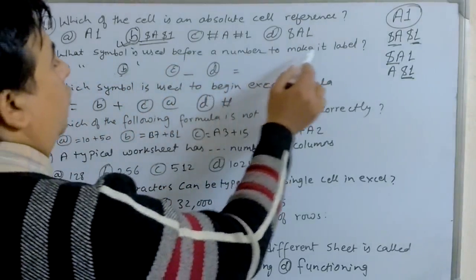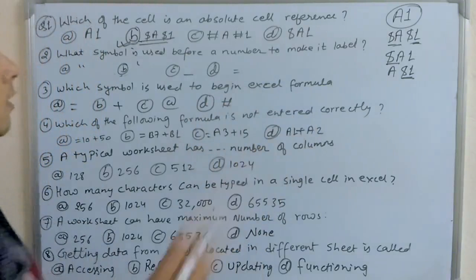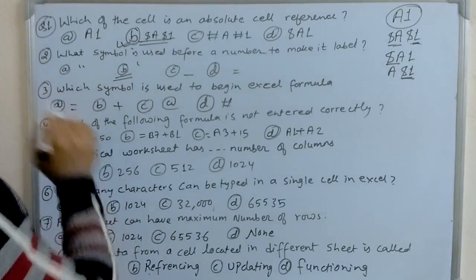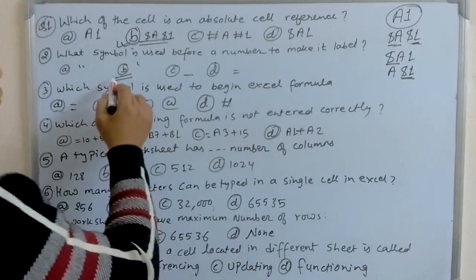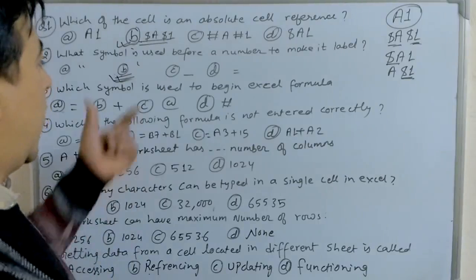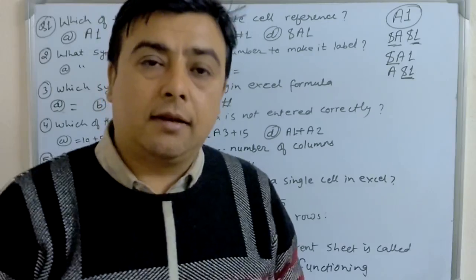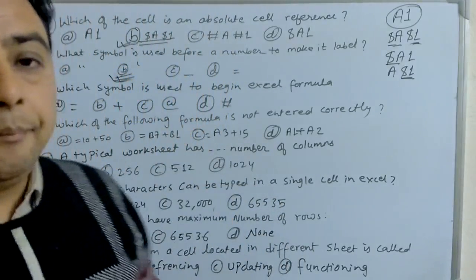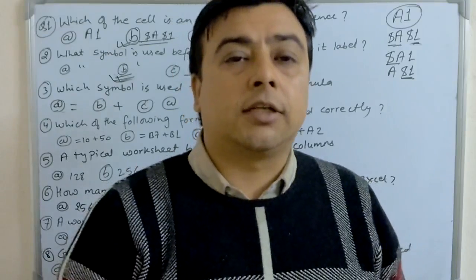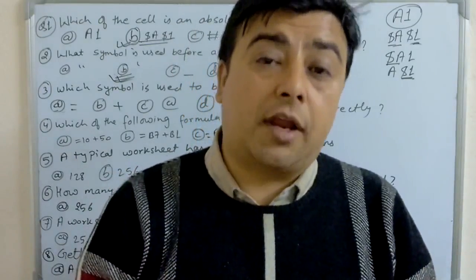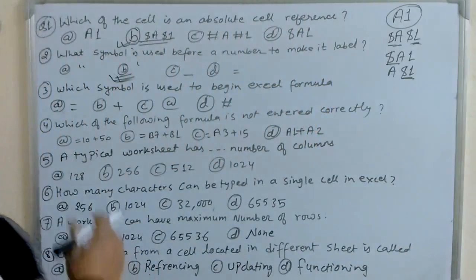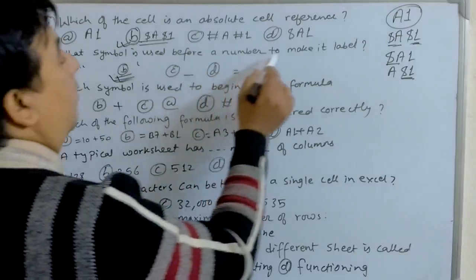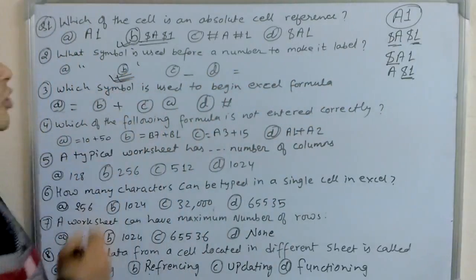The next question is: what symbol is used before a number to make it a label? To make any number a label, we must use an apostrophe — not a quotation mark, not underscore, not equal to, but apostrophe. If we use apostrophe, the number becomes a label. If we use inverted comma, then the number or any letters or characters become a string. So apostrophe is used to make a number a label.